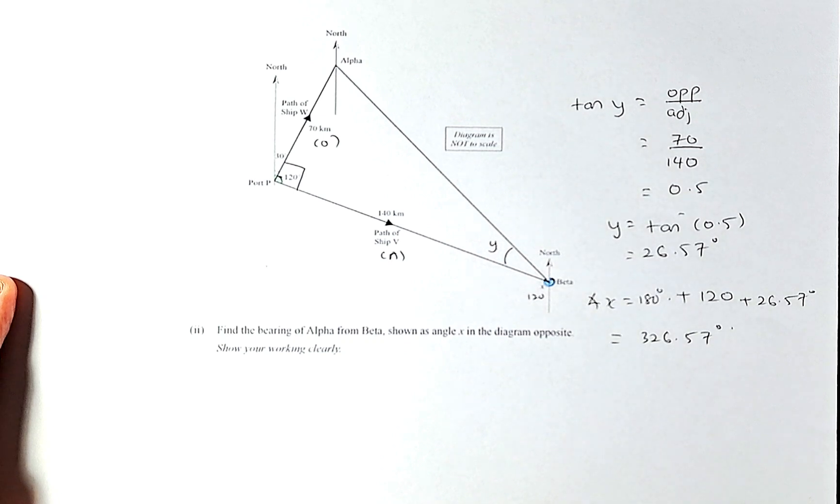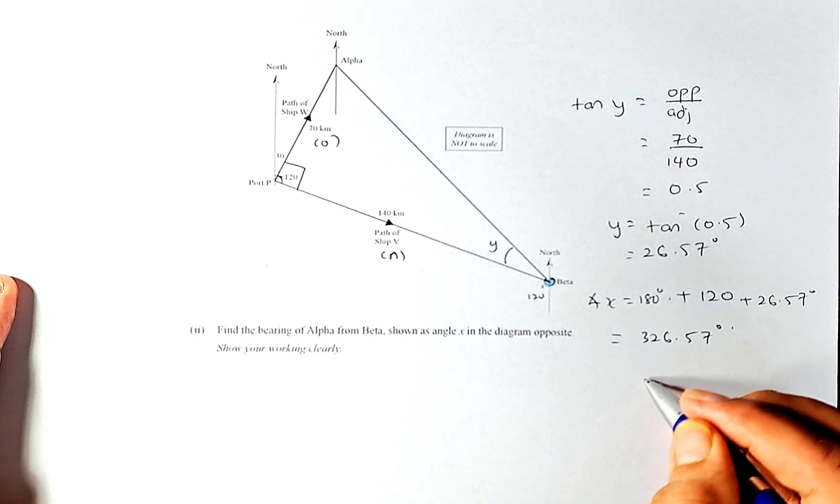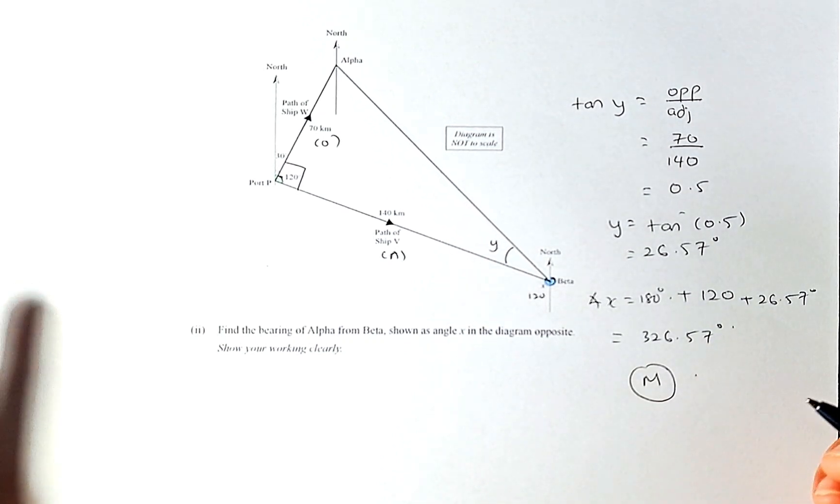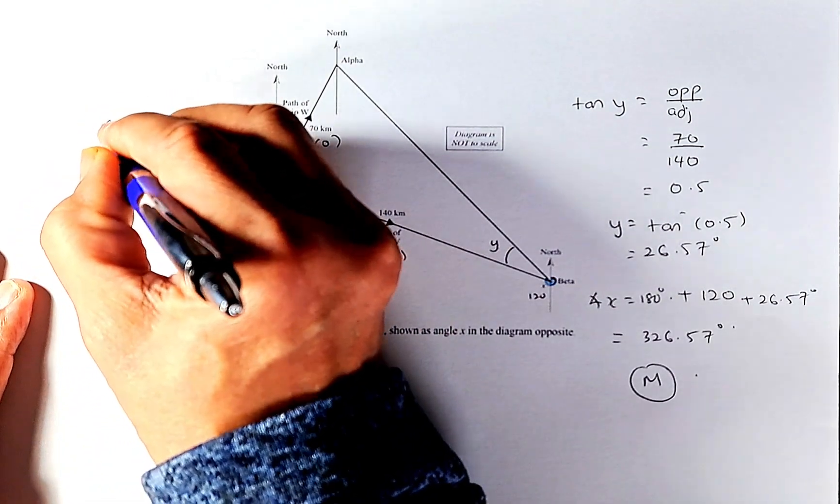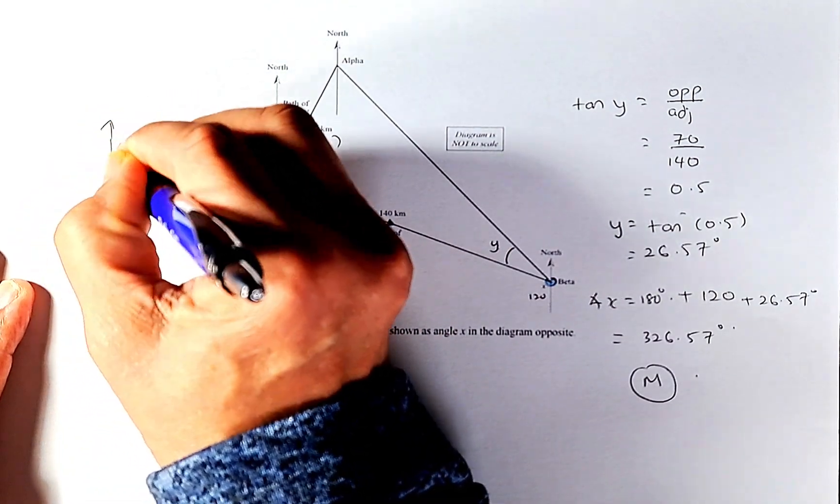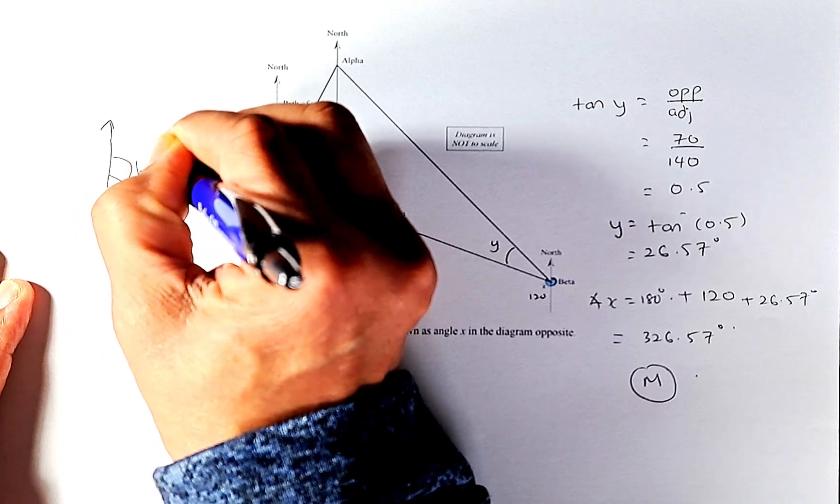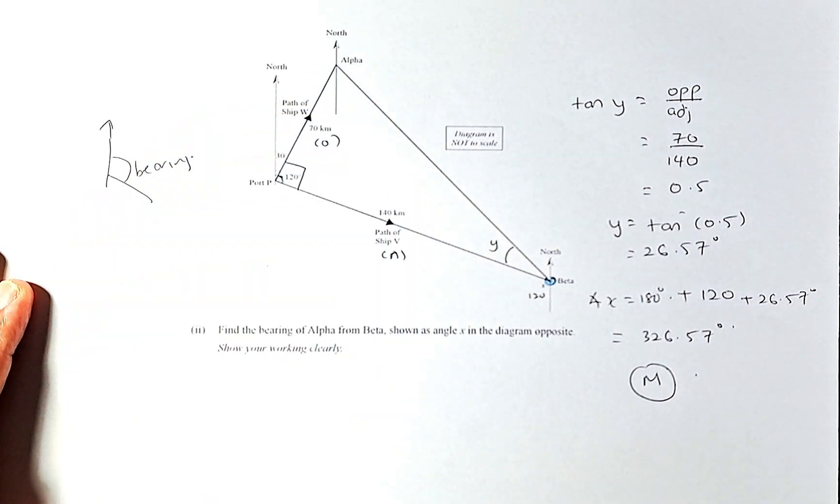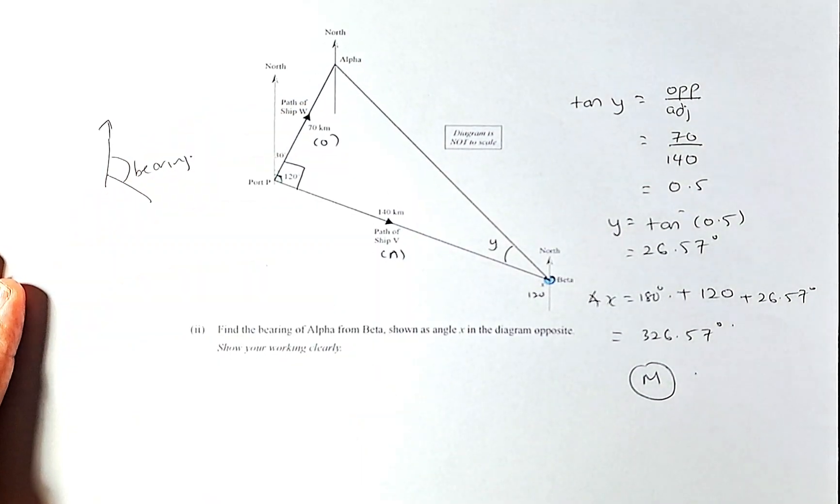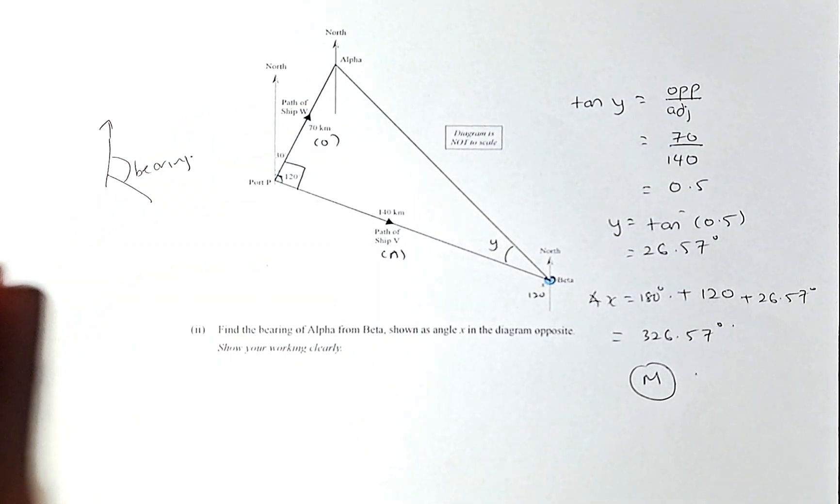So hopefully you understand what bearing is. Bearing is the measurement from the north to wherever it stopped. If you're not sure, watch my video, google Mr. Ong math lesson bearing and you should be able to understand that. Cheers everyone and have a great day.